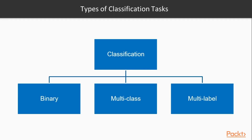There are three types of classification tasks. The first one is called binary classification, and in this case we have only two categories in our target, so for every observation we will predict if it belongs to the first category or to the second category. The second type of problem is called multi-class classification, and this is when we have more than two categories for our target. Again, for every observation we try to predict to which category it belongs.